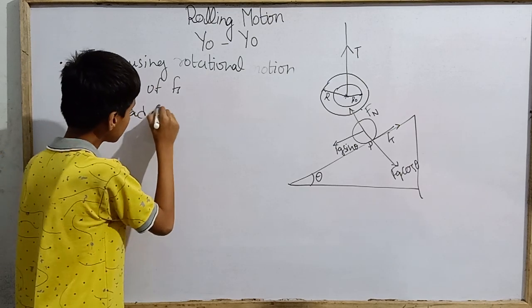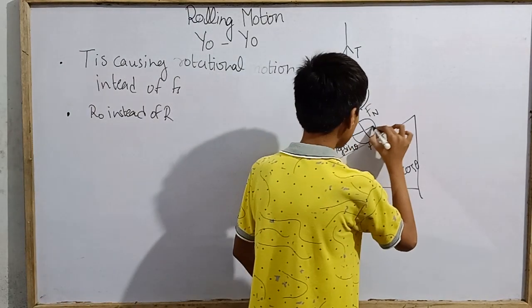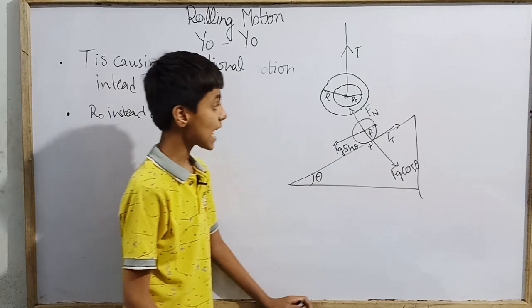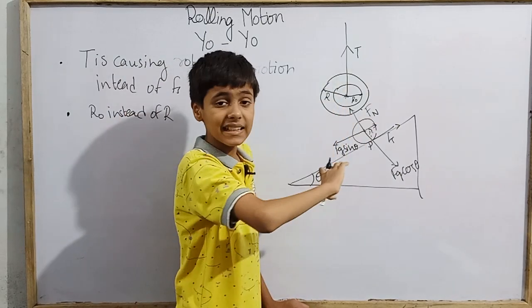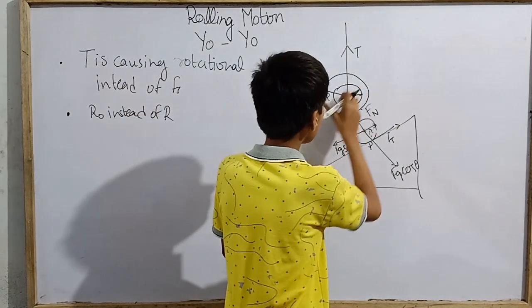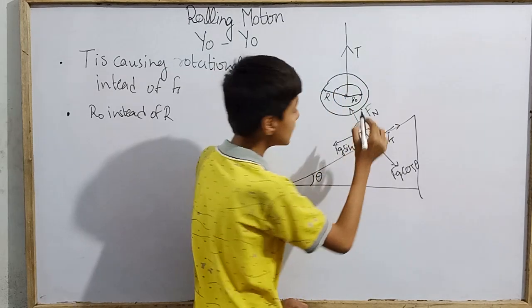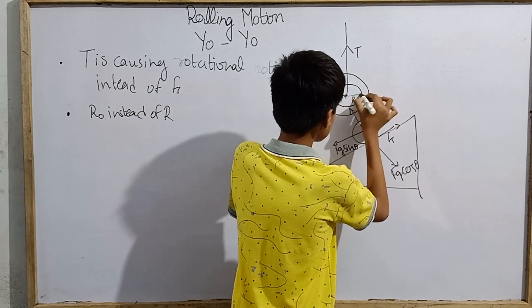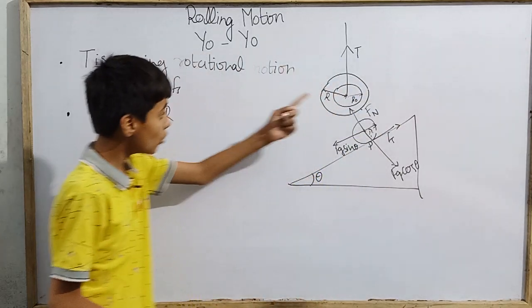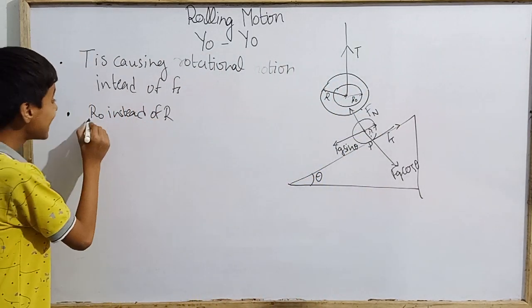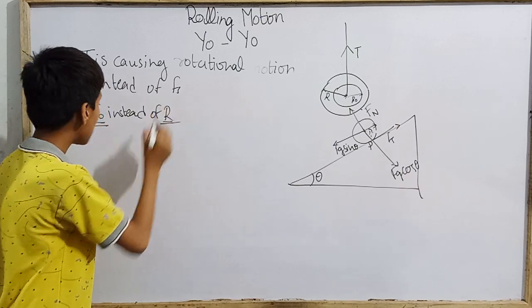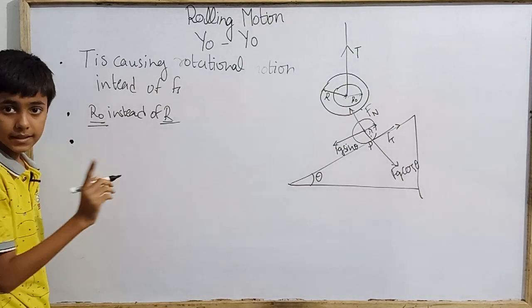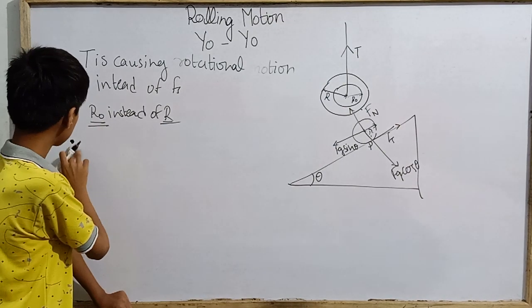Here static frictional force does rotational motion, but here tension force causes rotational motion. Another important point to note is we have to put r0 instead of r. There is an explanation behind this: because I said that this radius r is rotating, but here this r is not rotating, this r about r0 is rotating. That's the reason you suppose here to be r0 instead of r.